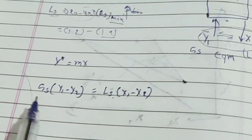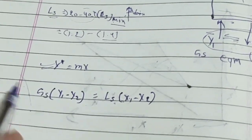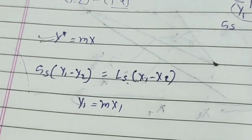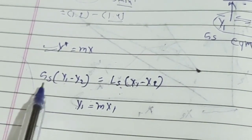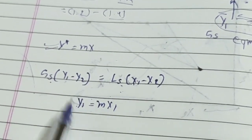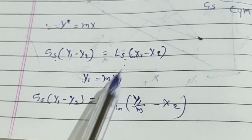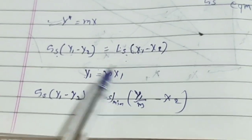To find LS minimum, I told you that Y1 and X1 are in equilibrium, so they must follow the equilibrium equation: Y1 = m times X1, which gives X1 = Y1 over m. Substituting this into the material balance equation, LS becomes LS minimum. So the formula for LS minimum uses X1 = Y1/m and the known values of Y1, Y2, and X2.